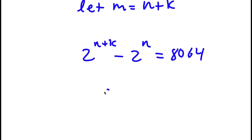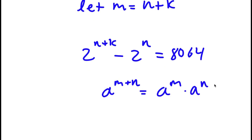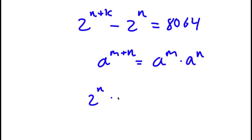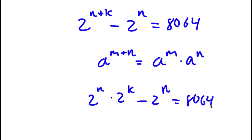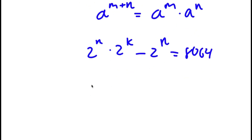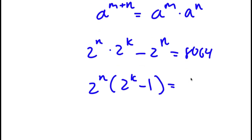Now, using the property that a to the power of m plus n equals a to the power of m times a to the power of n, I can write 2 to the power of n plus k as 2 to the power of n times 2 to the power of k, minus 2 to the power of n, equals 8,064. Factoring out 2 to the power of n gives 2 to the power of n times 2 to the power of k minus 1, equals 8,064.